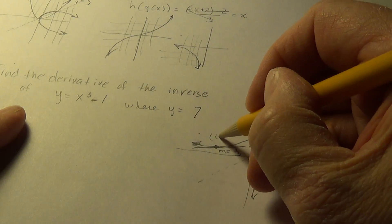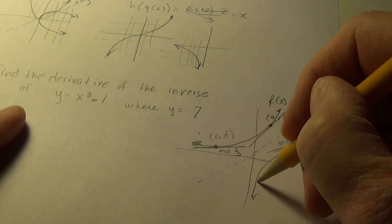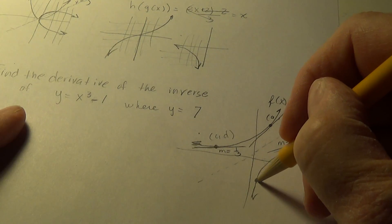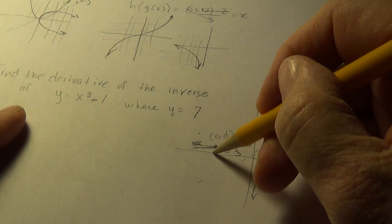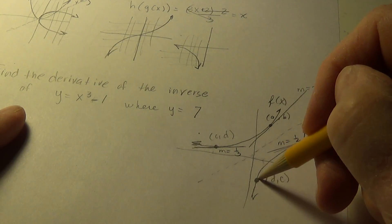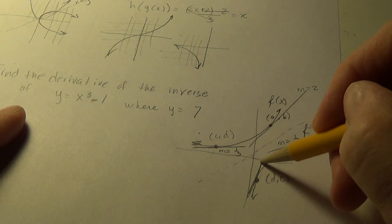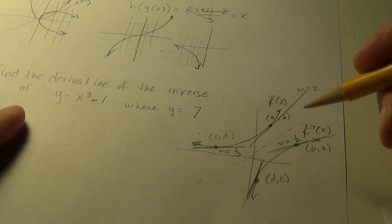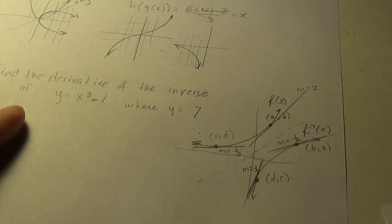Then, the close cousin point, say this is c comma d. Then, there's d comma c, it's about right here. So, if we went d over and c up, we would go c over and d down. This point has a slope of 3. Always reciprocals of one another.